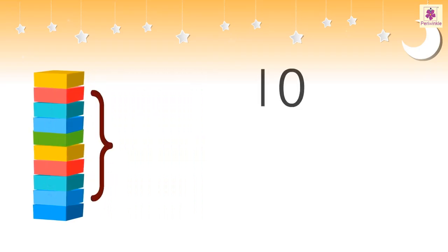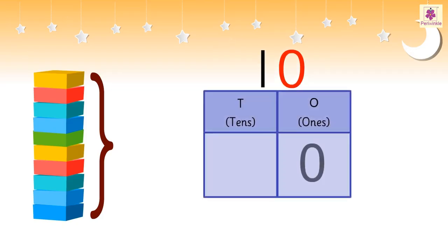Number 10 is the first and the smallest two-digit number. In a two-digit number, the digit on the right is written in the ones column as it is made up of ones. It is also called as units.